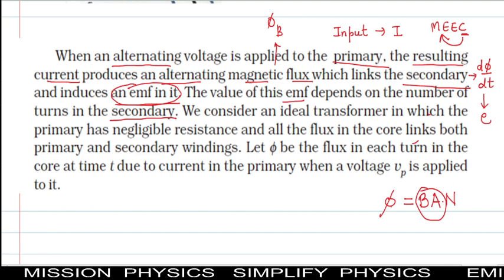The EMF is induced in the secondary coil - the output coil. Now, what is an ideal transformer? An ideal transformer is one in which the primary coil has negligible resistance and all the flux in the core links both primary and secondary coils. This means both self and mutual inductances appear here. Two conditions: first, primary has negligible resistance; second, all flux in the core links both primary and secondary coils.